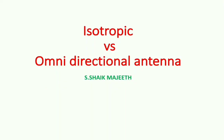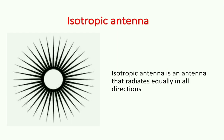Isotropic vs Omnidirectional Antenna. An isotropic antenna is an antenna that radiates equally in all directions. Radiation from the sun is isotropic, since the sun radiates equally in all directions.